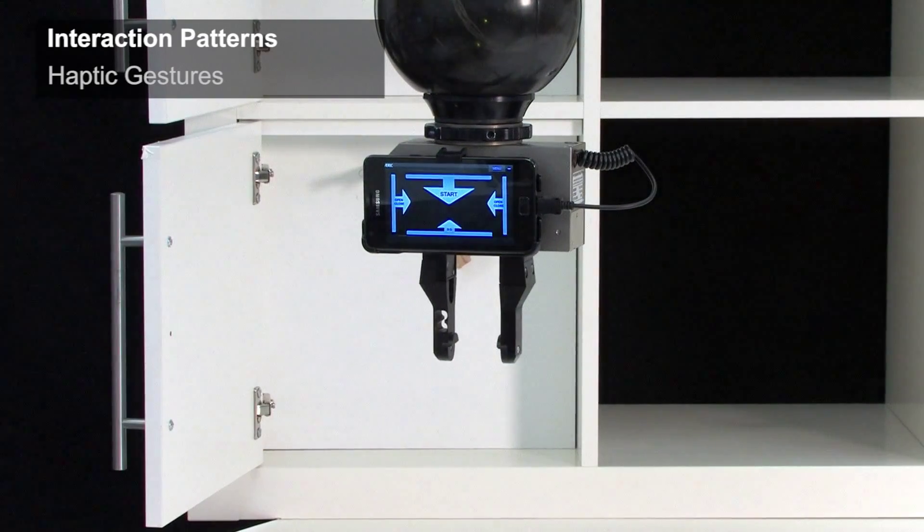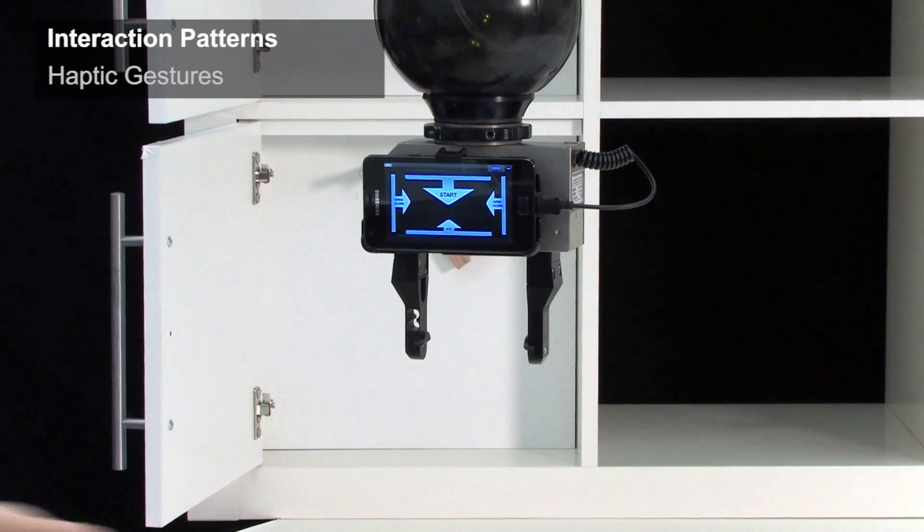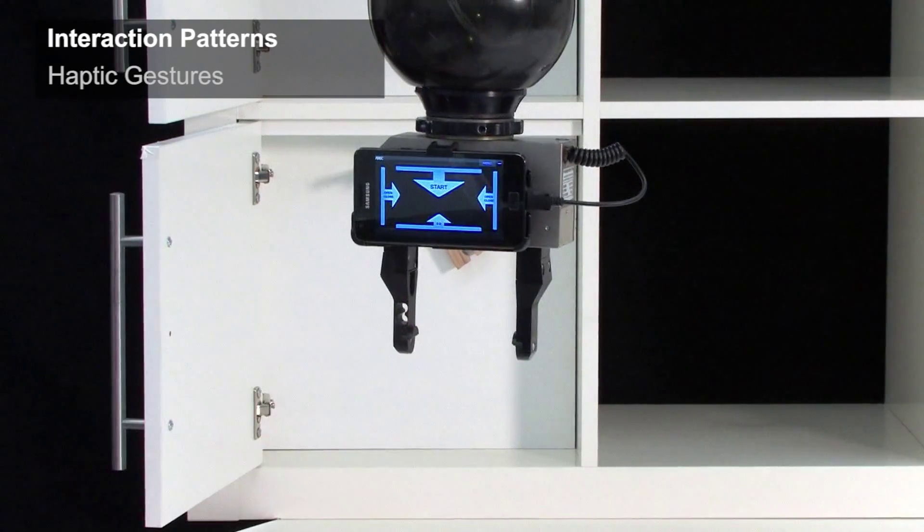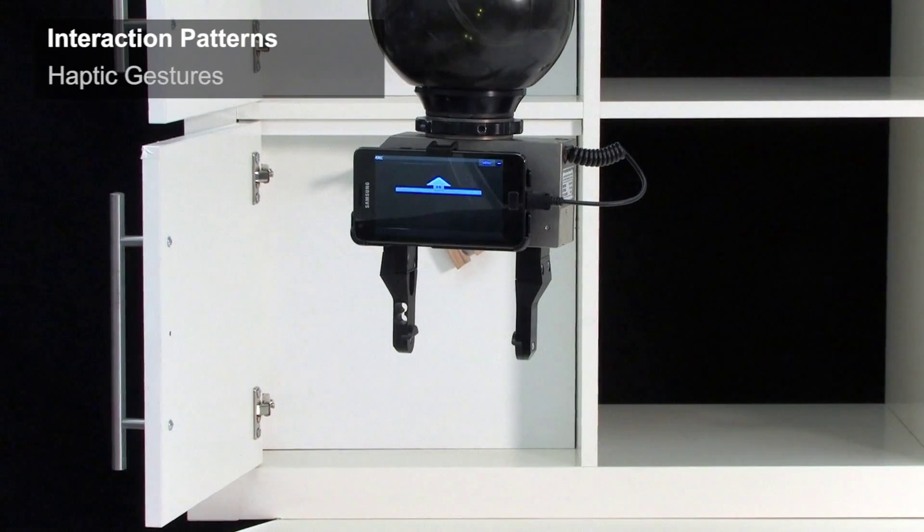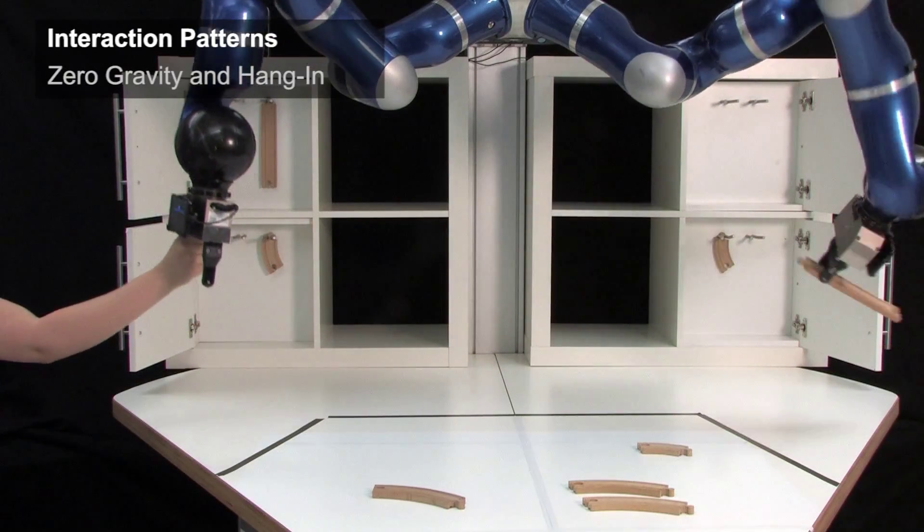The system now offers various interaction possibilities such as opening and closing the gripper or switching to gravity-free mode. The robot is light as a feather and can be positioned freely by the operator.